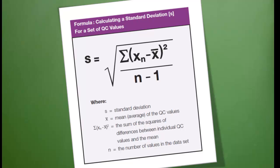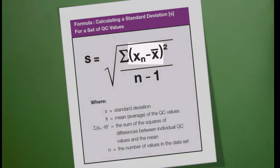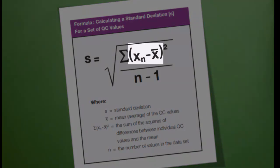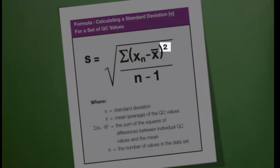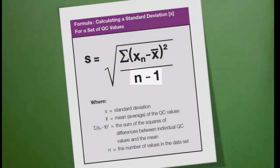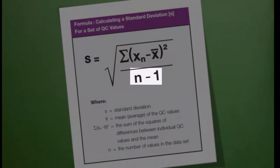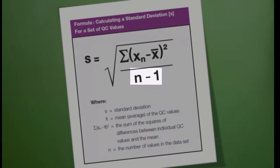Let's simplify that language just a little bit. We'll be subtracting the mean from each value in the data set. Then we'll square those values and add them all together. Finally, we'll divide by the number of values in the data set minus 1.